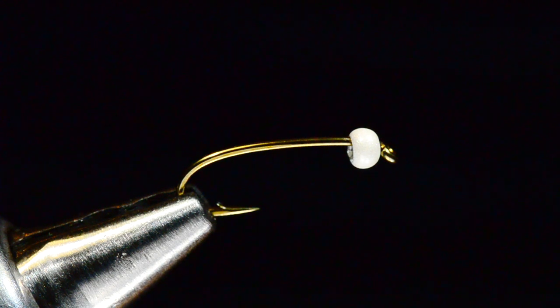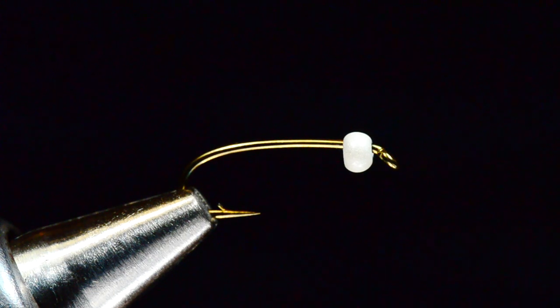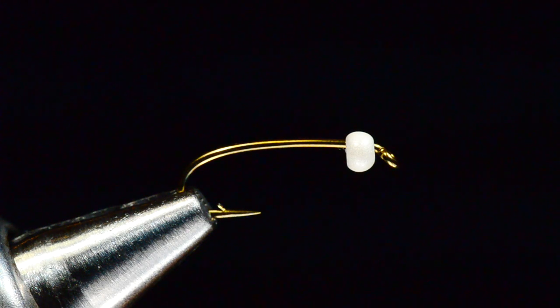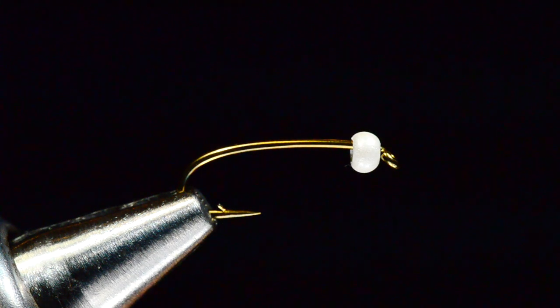And I'm going to start with the hook I've got here, a Daiichi 1760, which is a two extra heavy hook. It's a little stouter than the Tiemco 2302, and I like this because a lot of times in lakes the fish are bigger and having a hook that will hold up to heavier tippet and bigger fish is always a plus. And what I've got on here is a 7/64 white brass or tungsten bead. You can use either depending on how heavy you want the fly to be.